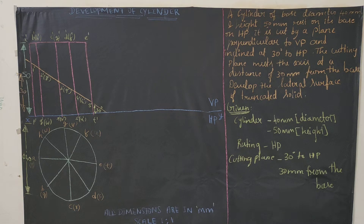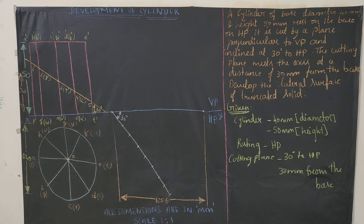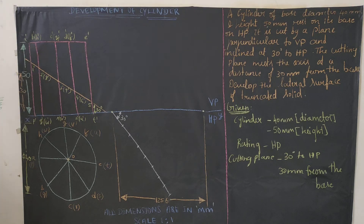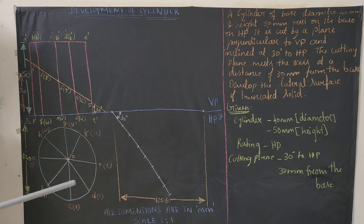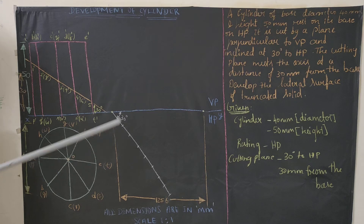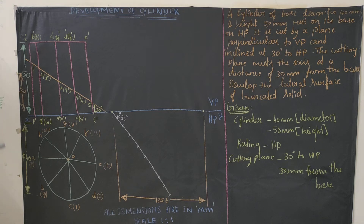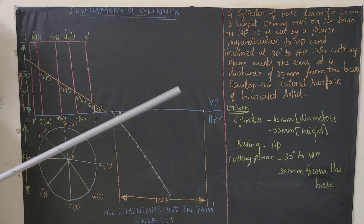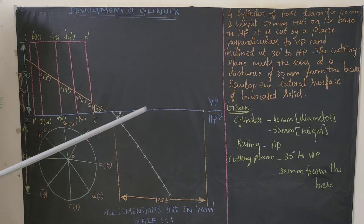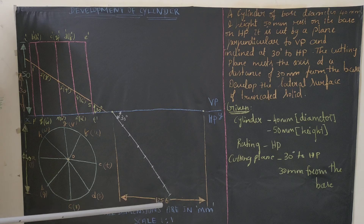Now we will see how to develop the surface of the cylinder using the parallel line method. Whenever we have a cylinder or prism, we use the parallel line method. Whenever we have a cone or pyramid, we use the radial line method. Since we have a circle, the width we need is the circumference of the circle. The formula is π × d or 2πr, so π × 40 = 125.6 mm. From the starting point, we mark 125.6 mm.